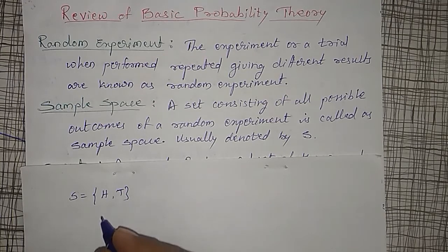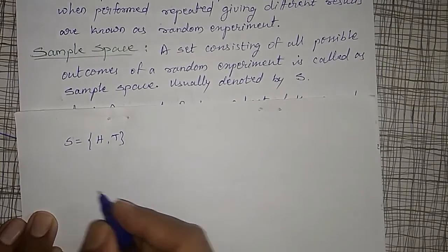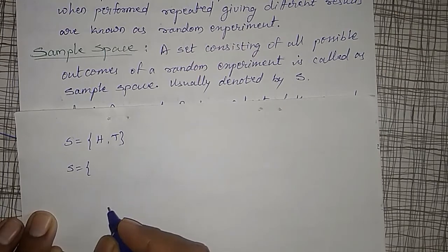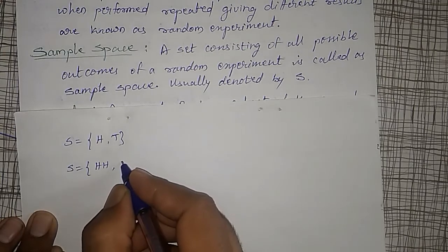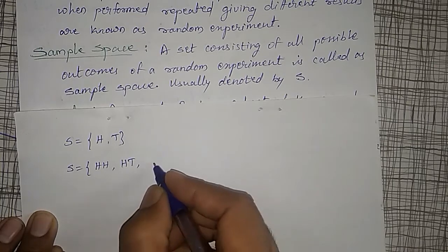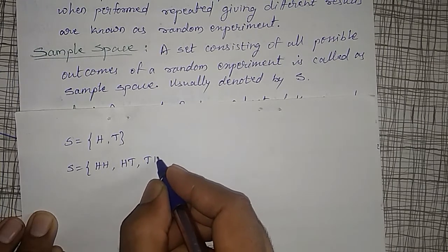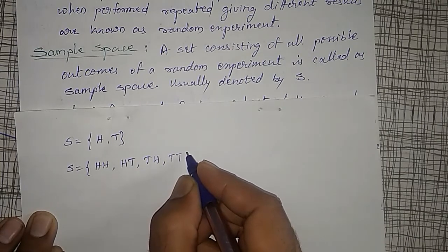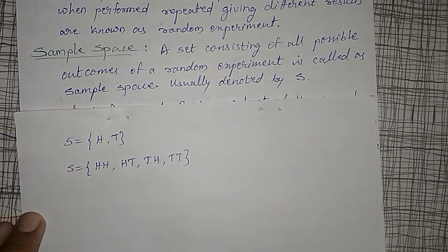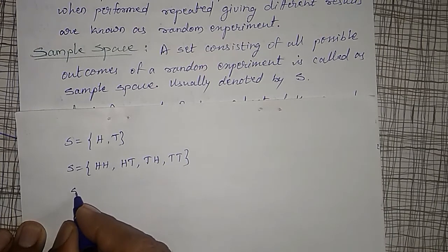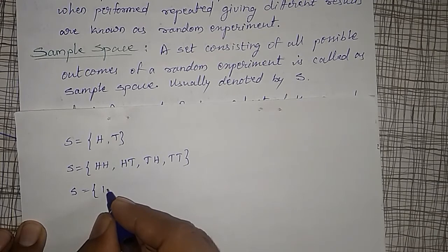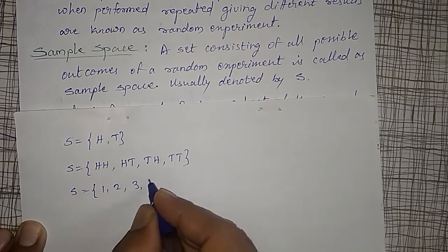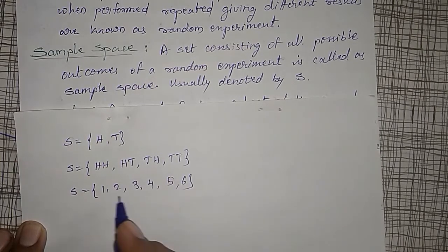This set is known as a sample space. Or whenever you toss two coins, the possible outcomes are: both coins may get head-head, or first coin head and second coin tail, or first coin tail and second coin head, or both coins may get tail. Whenever a single die is rolled, the dots facing up are 1, 2, 3, 4, 5, or 6 — these outcomes may come.